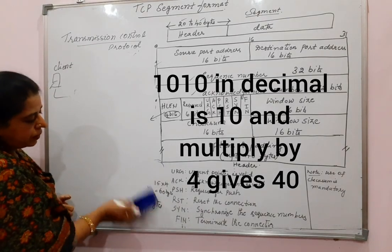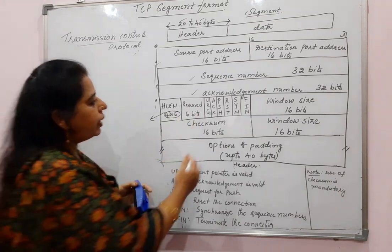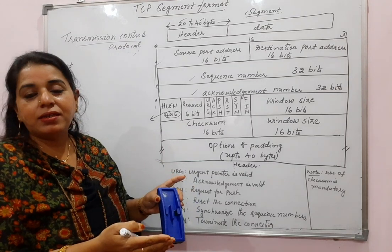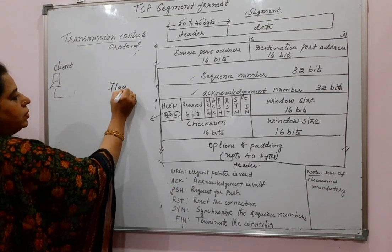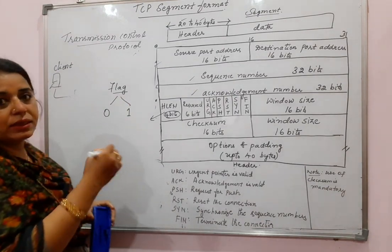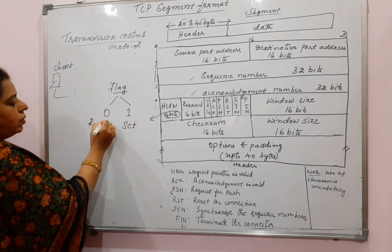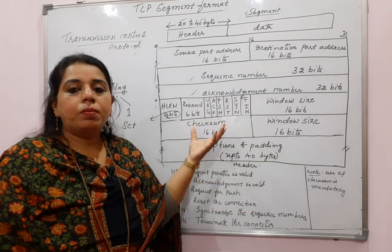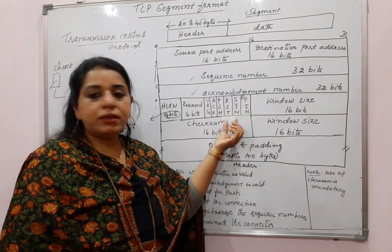Next, there are 6 bits reserved. After that, there are 6 flag fields — URG, ACK, PSH, RST, SYN, and FIN. Each flag has only two possible values: 0 or 1, meaning either set or reset. At any point, when a segment is traveling from the sender to the receiver, more than one of these flags may be set, and each one has its own significance.